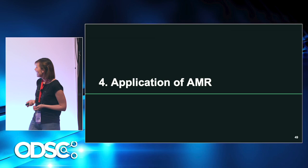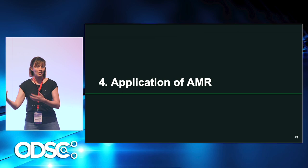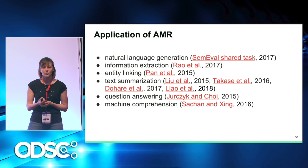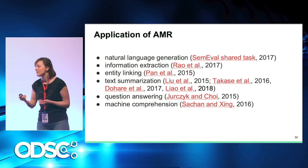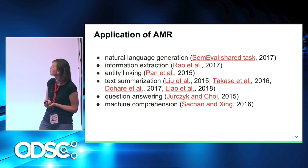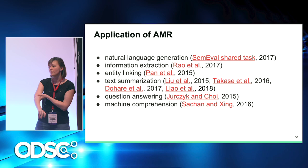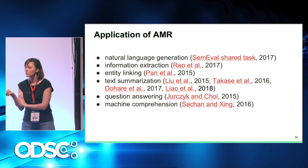The last section is applications of AMR. Now that we can build AMRs from natural language sentences, how can we apply this? The most development has been done in text summarization — there are different groups working on it and they've achieved really good results. The company Nuance Communications uses AMR for intent detection in production. There was also a shared task on natural language generation from AMR in 2017.